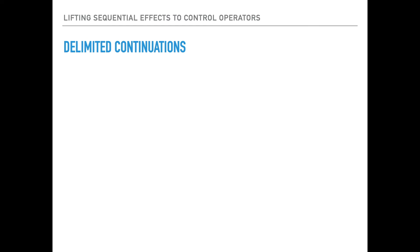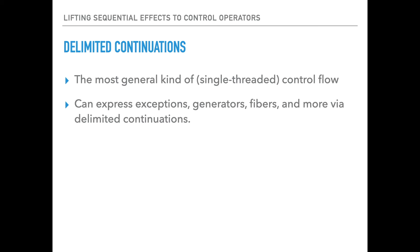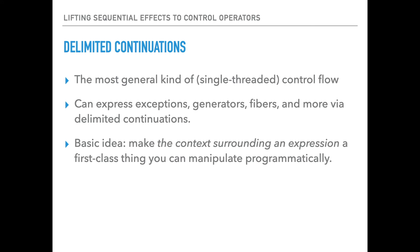So how does it work? First let's talk about delimited continuations. Delimited continuations are the most general kind of single-threaded control flow. You can use them to express exceptions, generators, fibers, and many more things. The basic idea, building on the idea of traditional continuations, is that you make the context surrounding an expression a first-class thing that the program can manipulate. So the program can capture the context, it can duplicate it, it can discard the current context and replace it with another one. And in addition to all these things, it can do this up to certain bounds, which makes it easier to build certain kinds of abstractions.